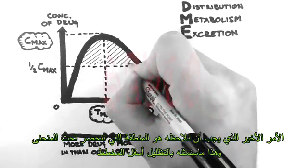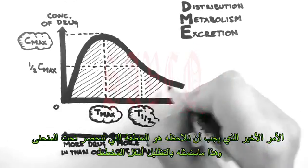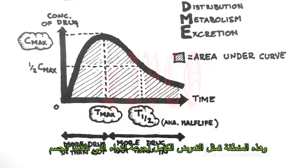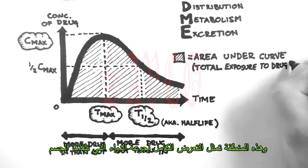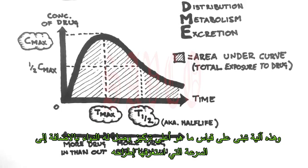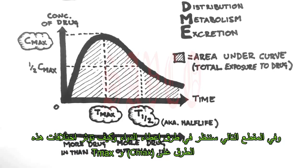The last thing to look at is the area under the curve, which I have illustrated by shading in the space under the graph. This represents the total exposure to a drug that the body receives. This is a function of how high the concentration of the drug gets, as well as how quickly it's excreted. And that's an introduction to the basics of pharmacokinetics. In the next video, we'll look at routes of drug administration and how different routes can affect C-max and T-max.